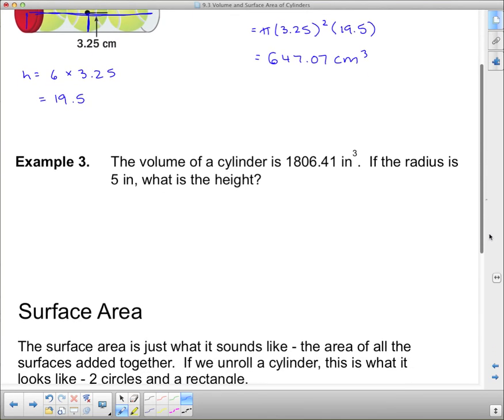Now this last one's a little different. It says the volume of a cylinder is 1,806.41 cubic inches. If the radius is 5 inches, what is the height? So we're finding a different thing. We still need this formula: volume equals π r² h. But what we're finding is different. I'm going to put this number in, since it told us it's the volume. I'm going to put it in for volume, which is 1806.41 equals π. r in this case is 5. We have to square it. And we need an h.